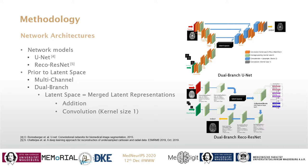We also experimented with two different ways of combining those two latent representations. For the first method, we simply added them together to obtain the final latent space. For the second method, we supplied both representations to a convolution layer with a kernel size of 1, which provided a final combined latent space as output.